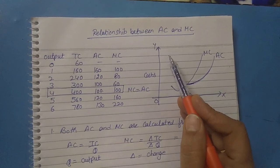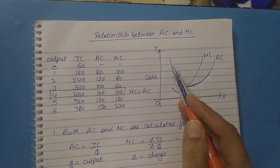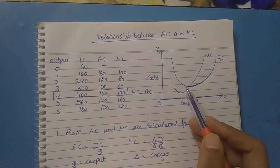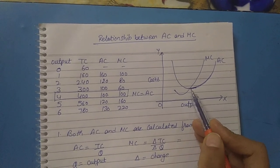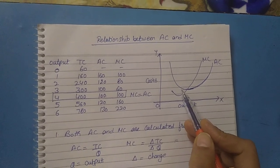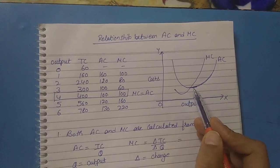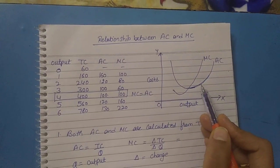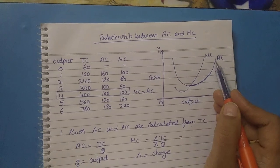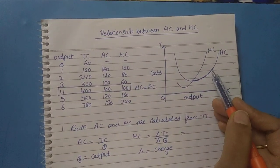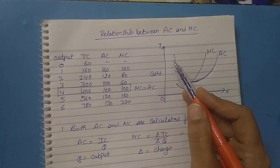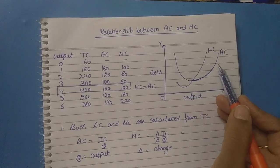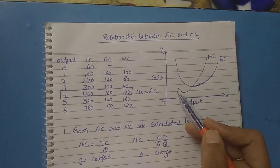The AC curve is our U-shaped curve. Why is it U-shaped? Because of the law of variable proportions. In the beginning, the AC curve is diminishing. It diminishes, but at some point — as you can see in the schedule — at the third and fourth unit of output, the average cost becomes constant. And after the fourth unit onwards, it starts increasing. So first it declines, then it's constant, then again it starts rising.